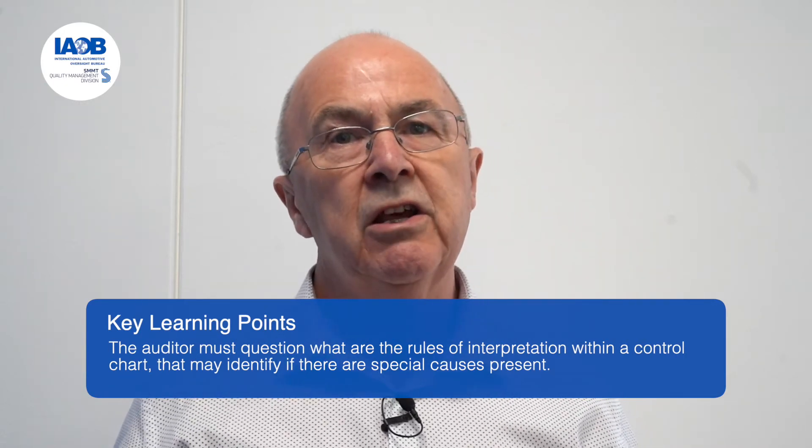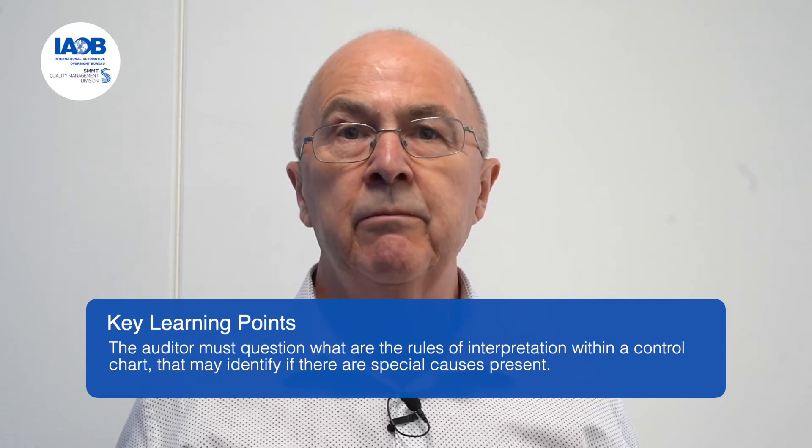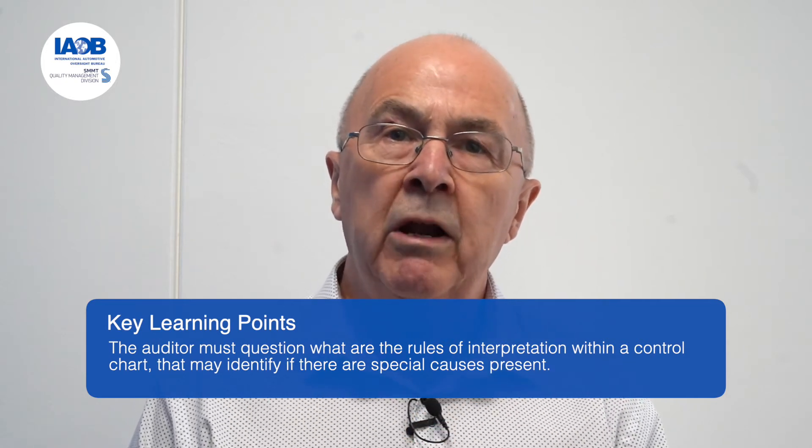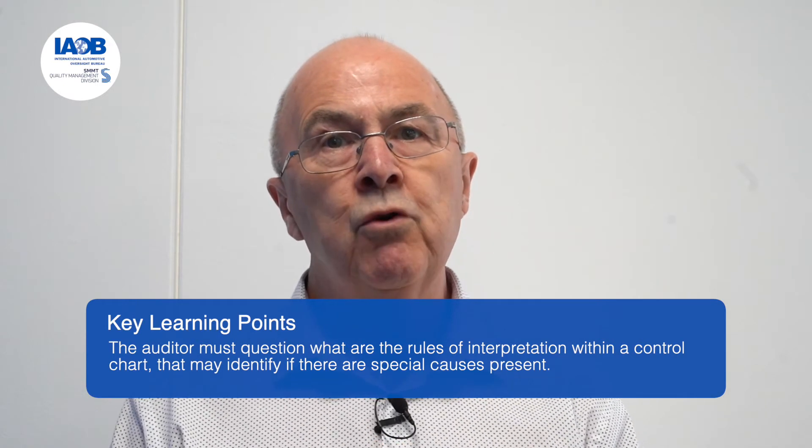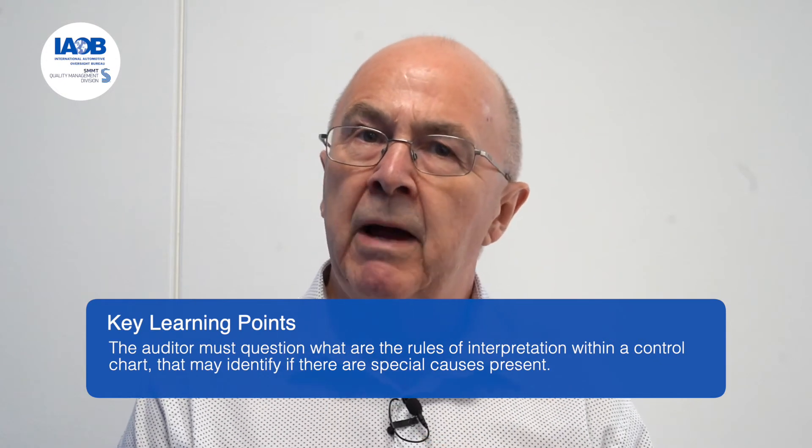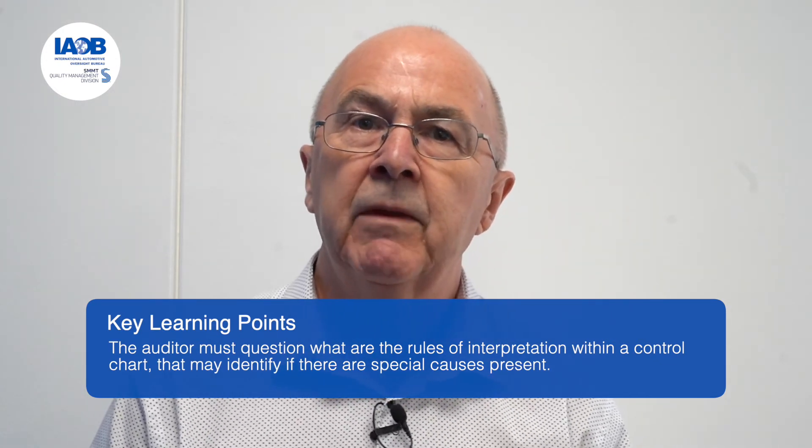When auditors are auditing statistical process control, they themselves must have good statistical understanding. Auditors should question what are the rules of interpretation within a control chart that may identify if there are special causes present. In this case, the auditees said a special cause may be points outside of the control limits, but in the data seen there were eight points increasing — that itself might identify a special cause. The people interpreting the results were not aware of what those rules of interpretation are. The auditor needs to have the ability to question the organisation's auditees on their effective understanding and interpretation of any statistical chart.